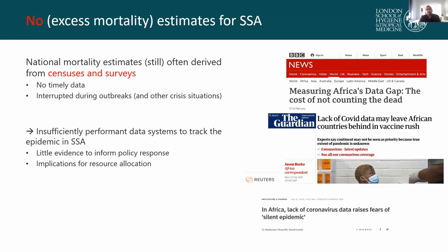No timely data are generated through these data systems, and in addition, a lot of surveys were interrupted as a direct result of the epidemic outbreak. The end result is that our data systems are insufficiently performant to track epidemic outbreaks or the impact of crisis situations in many countries, and there is little evidence to inform policy responses. This may also have implications for resource allocation if we cannot document the magnitude of the outbreak.